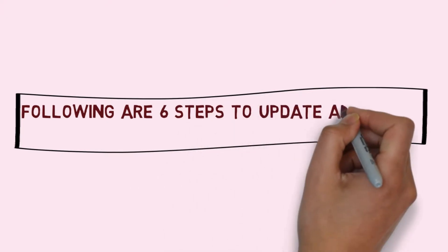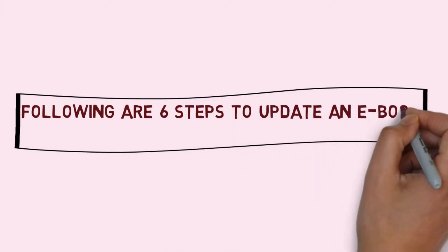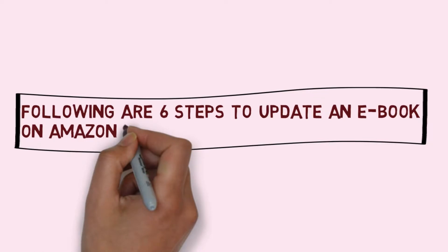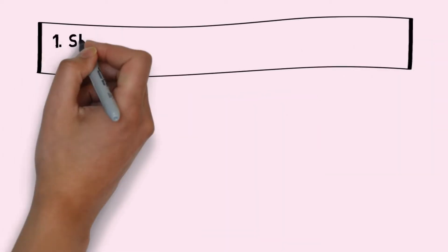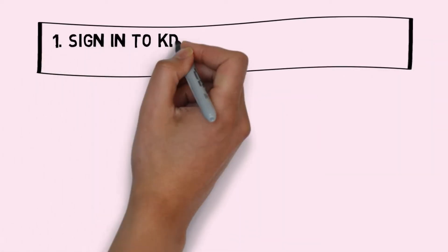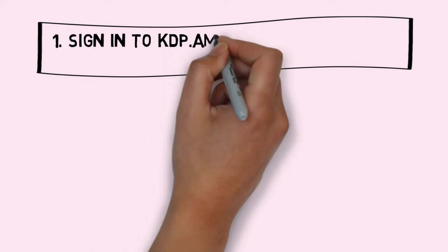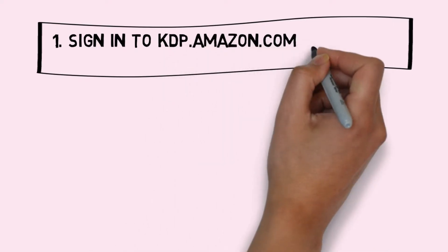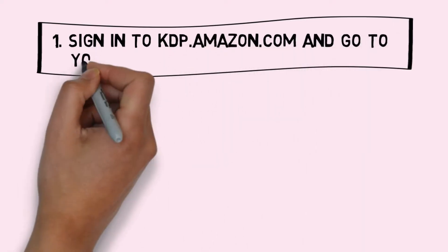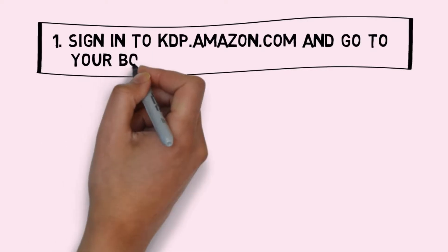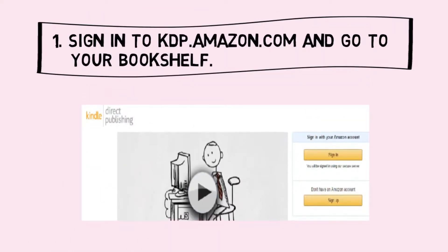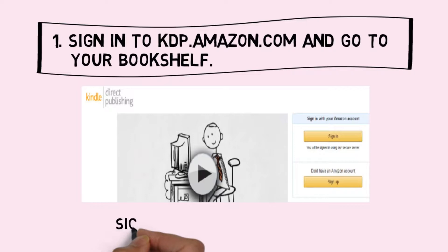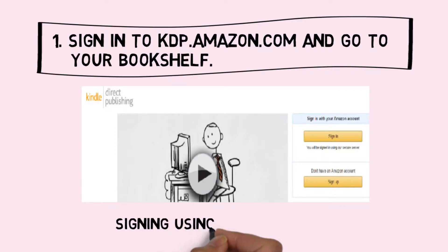Following are 6 steps to update an ebook on Amazon Kindle. Step 1: Sign in to kdp.amazon.com and go to your bookshelf. Sign in using your account.